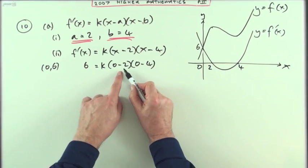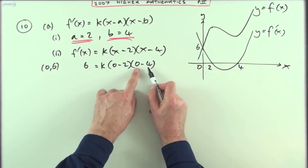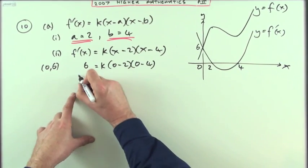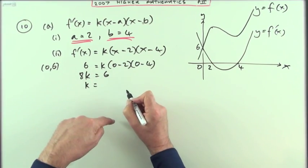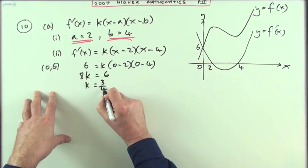So when x is zero so it's k times zero minus two zero minus four the answer is six. So I'll just put it on that side. And then that's quite easy. Negative two times negative four is eight. So eight k is six. Eight k is six. Take the eight across and divide. Six over eight k is three quarters.